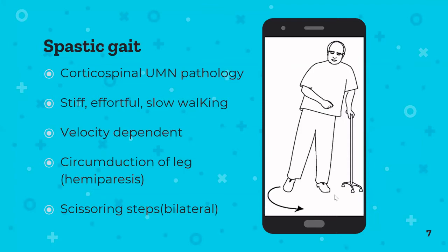Spastic gait is seen in stroke or MS patients with upper motor neuron pathology. The patient has a stiff, contracted upper limb and extended lower limb that they have to circumduct — bringing the leg around in a circle to move it. With hemiparesis, this affects one leg; with bilateral involvement like spastic cerebral palsy, you get scissoring steps, where circumduction occurs in both legs.